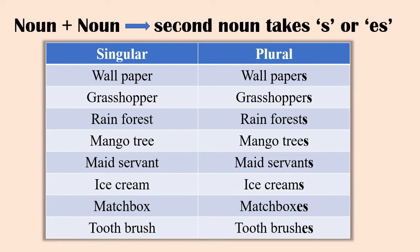When two nouns are joined to form a compound word, the second noun takes an 's' or 'es' for plural. This rule applies to all closed compounds too. Examples: wallpaper → wallpapers, grasshopper → grasshoppers, rainforest → rainforests, mango tree → mango trees, maidservant → maidservants, ice cream → ice creams, matchbox → matchboxes, toothbrush → toothbrushes.